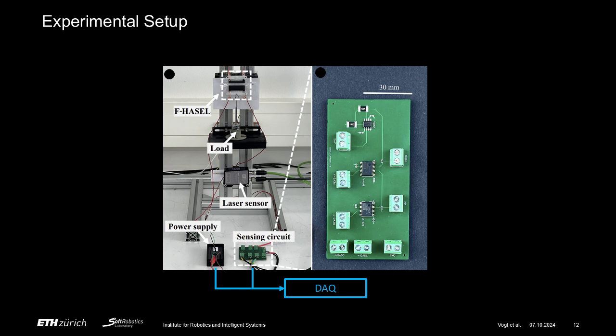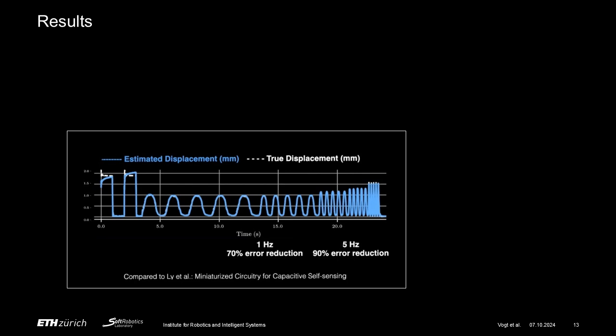Our measurements were mapped to the ground truth employing an offline third-order polynomial mapping approach. The estimated displacement generated by using the voltage method shows a close overlap with the ground truth displacement for both a step actuation signal at 0.5 Hz as well as for a sinusoidal actuation signal at frequencies ranging from 0.5 Hz up to 5 Hz.